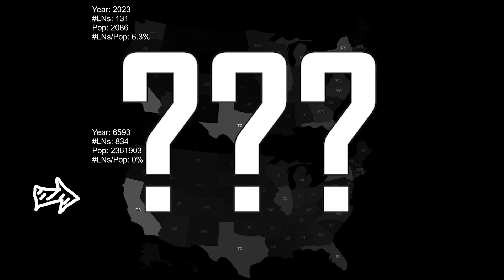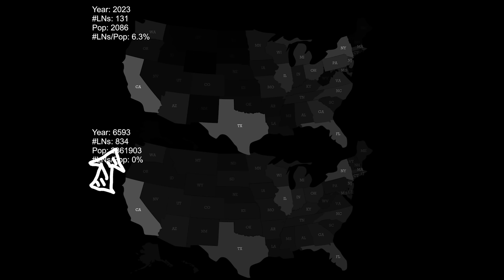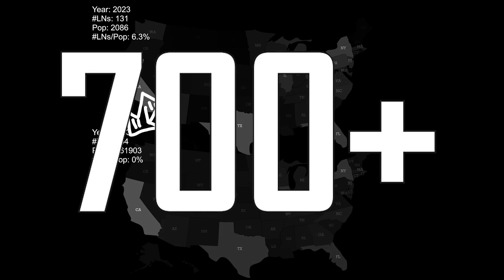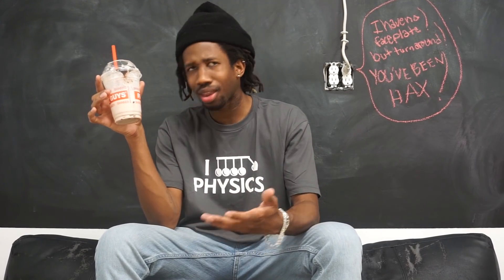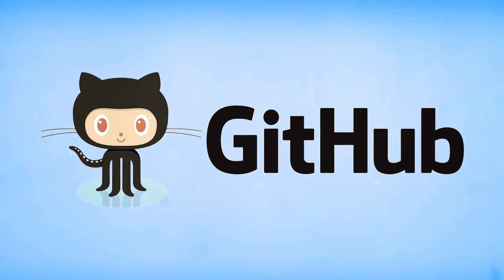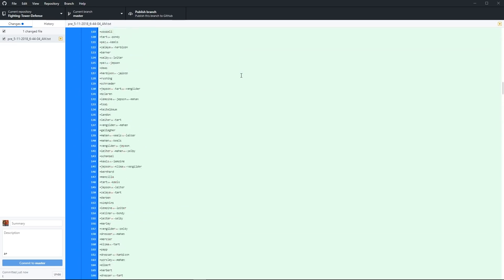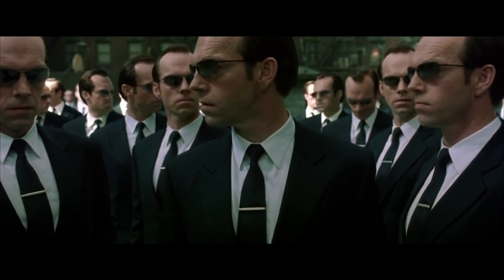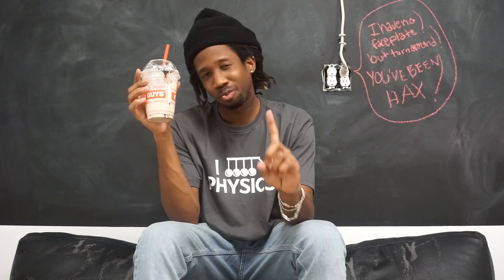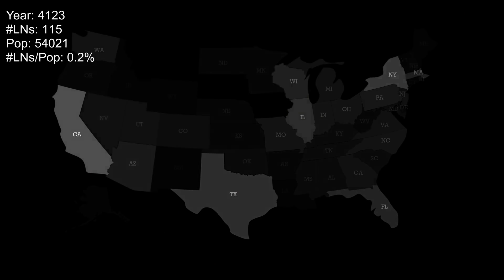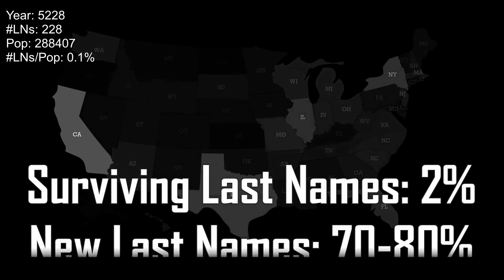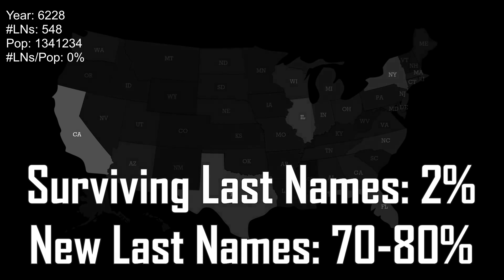Let's run this simulation and see what we can learn. Comparing the start to the end: our pool of last names will not shrink to only a handful. We started with 131 last names and ended with 834 — more than 700 more than we started with. Using some control software to visualize, it appears we have nothing to worry about as far as variety is concerned. New last names will continue to appear, so no, we won't all eventually have the same last name of Smith. Over time some last names will go extinct, and others will survive. Running the simulation three times, after about 4,000 years of convergence, 2% of last names on average seem to survive, while 70 to 80% will be completely new last names one way or another.